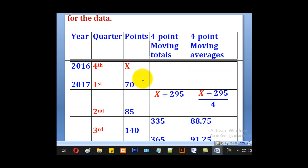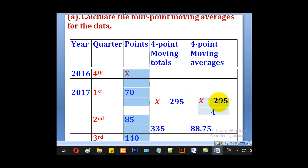For 4 point moving totals, we add 4 points, so 1, 2, 3, 4. Get the total for that, it will be X plus 295. Get the average, it will be X plus 295 over 4. Now where do you put it? You put it at the midpoint.